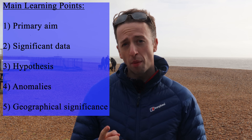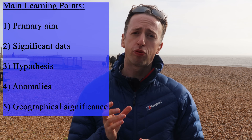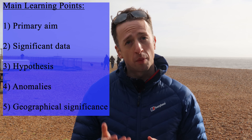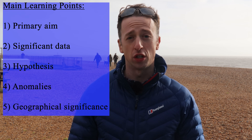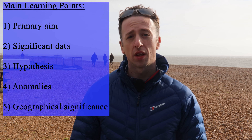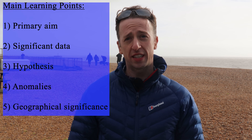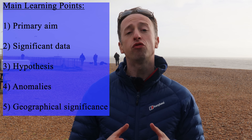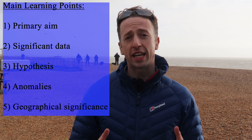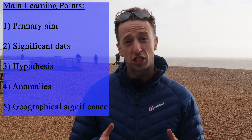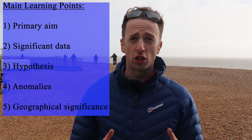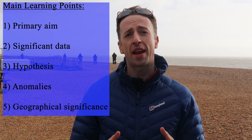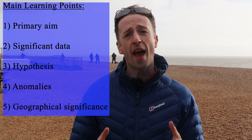Your conclusion needs to be a focused summary of your results. The key points to consider when writing your conclusions are: number one, ensure you link your findings back to your primary aim of the investigation; number two, highlight the most significant piece of data from your findings; number three, answer the question — does your investigation support your overall hypothesis; number four, reference reasons for any anomalies within your data; and number five, make a brief comment about the geographical significance of your investigation and outline how your findings can help other people.